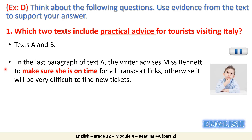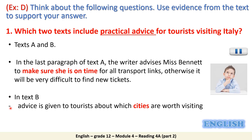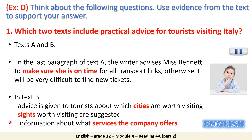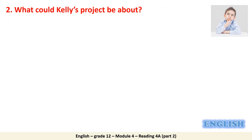What about text B? In text B, there is advice on the cities to be visited in Italy and the sites that are worth visiting. We also have information about the services the company offers. Moving on to question two — I want you to read texts C and D and relate information from both texts to answer the question. Pause the video to answer.